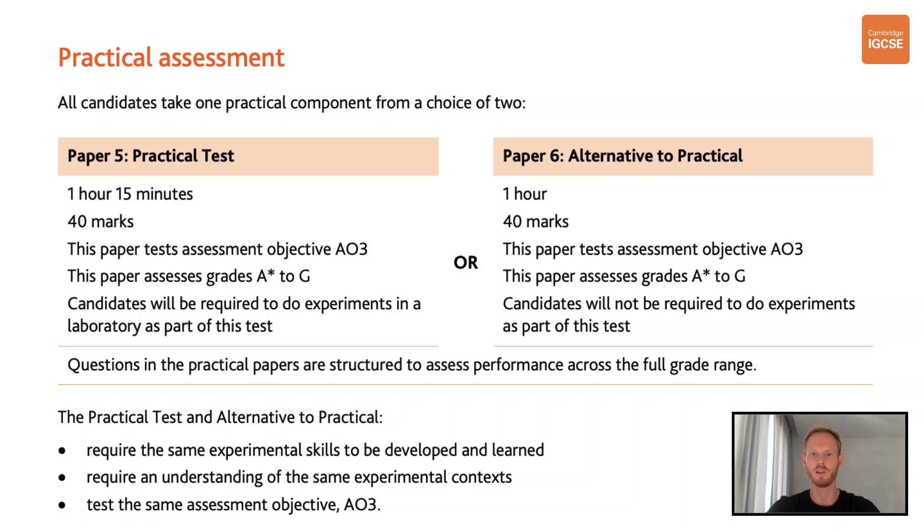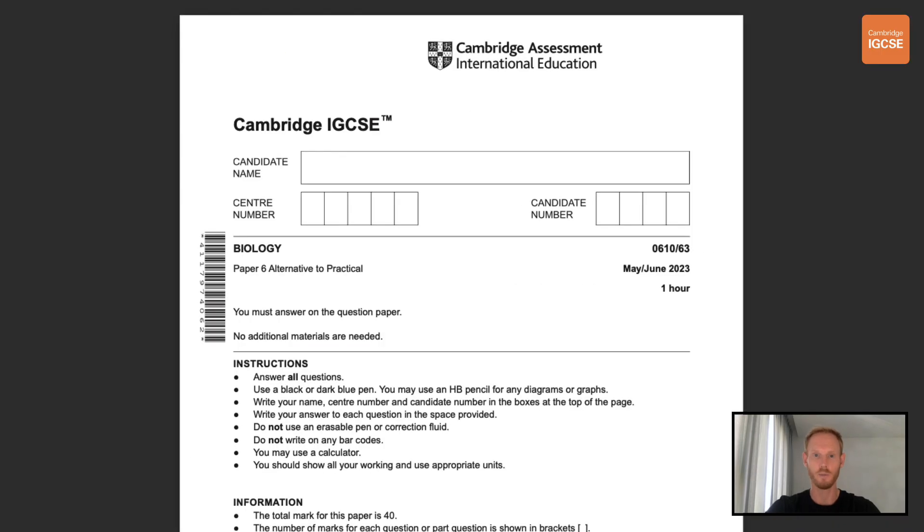Hello and welcome to another complete Cambridge IGCSE biology lesson. In this one we'll be breaking down another alternative to practical paper 6 from the 2023 May-June exam series. Please note this video is relevant whether you're preparing for paper 5 or 6 since both papers are almost exactly the same, at least in terms of where the marks come from. Before we begin it would be greatly appreciated if you'd take a moment to give the video a thumbs up and subscribe to the channel. Also if you have any questions please feel free to leave a comment below.